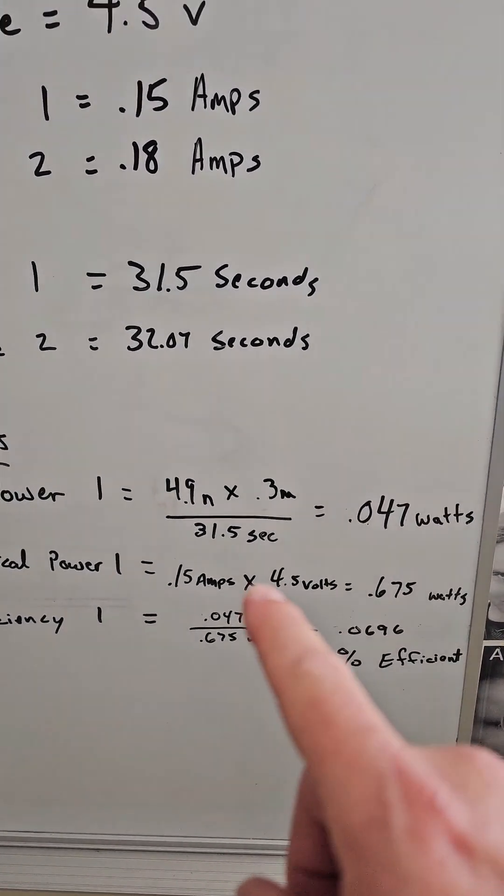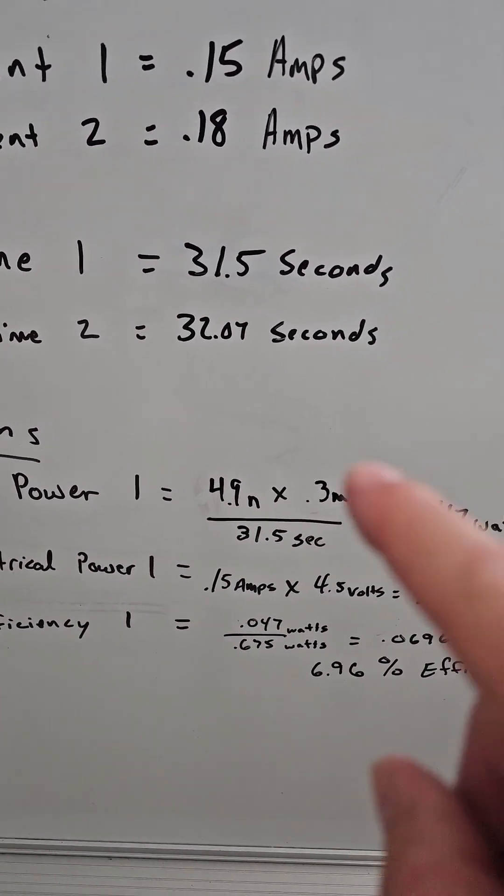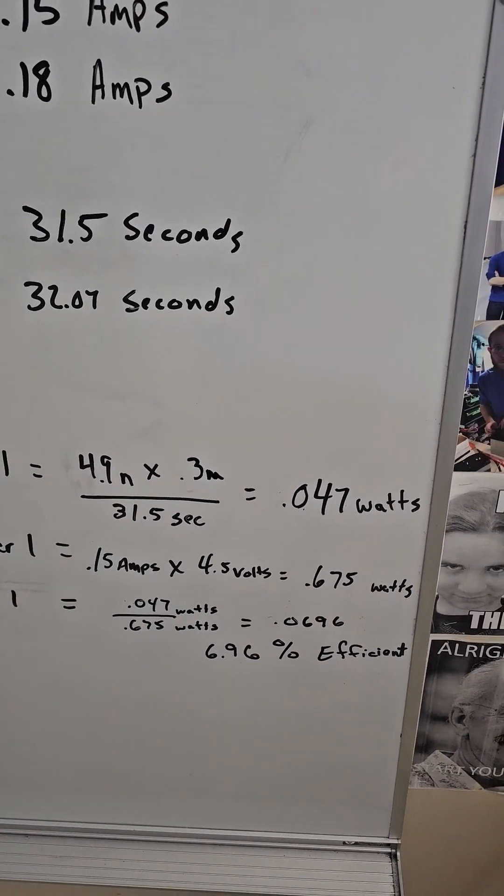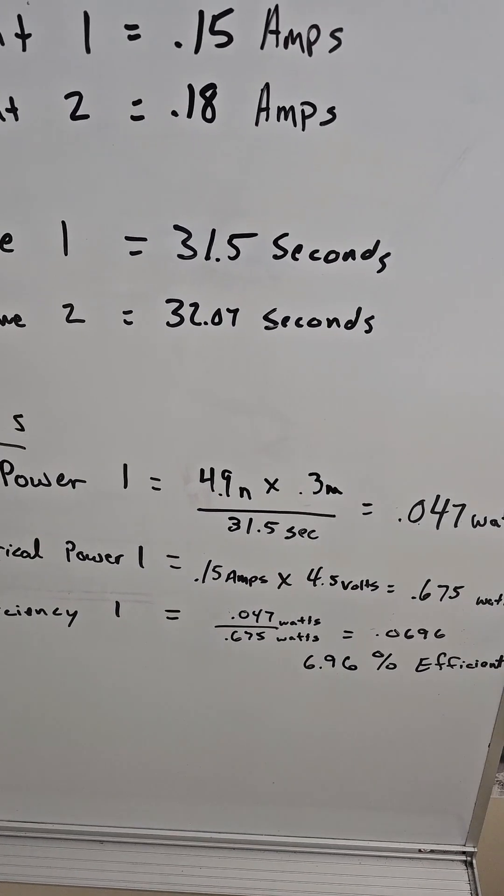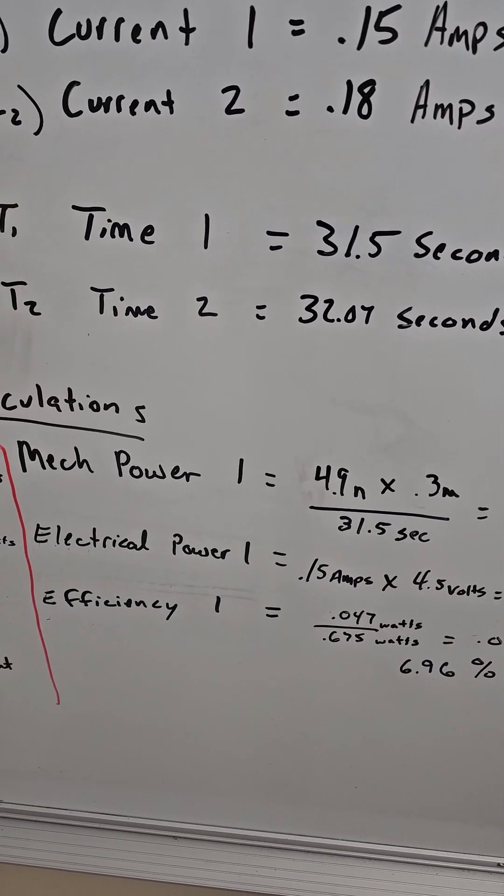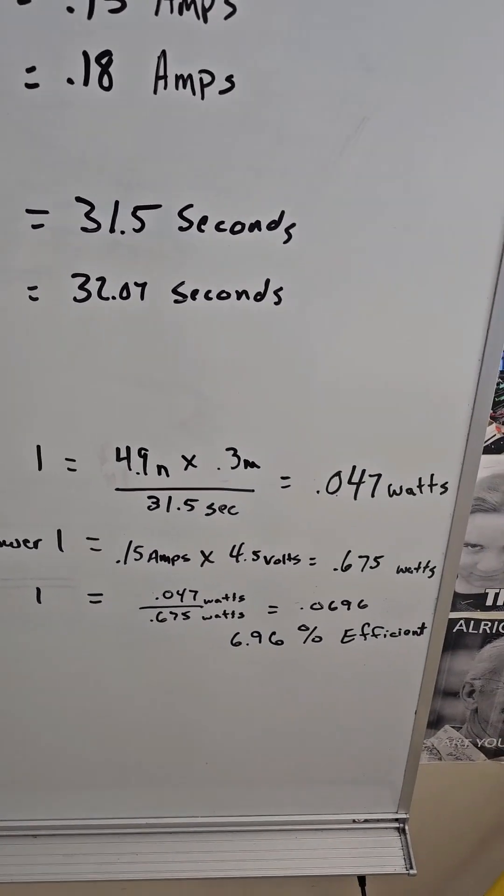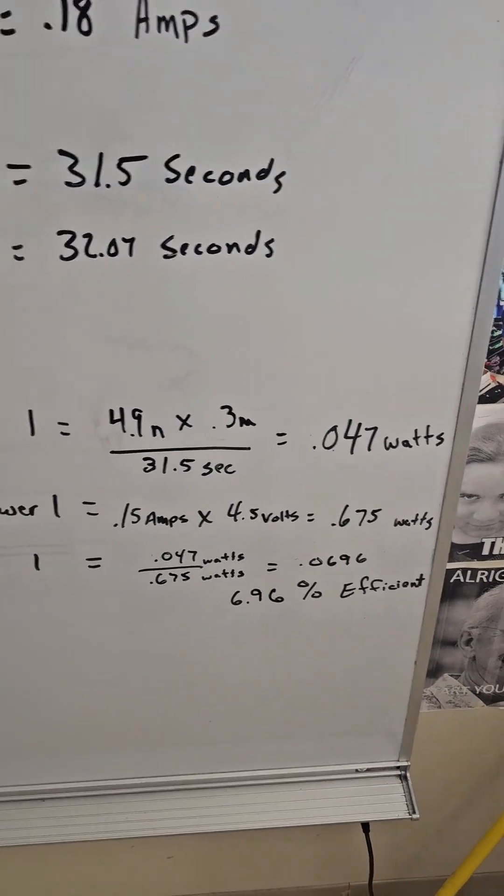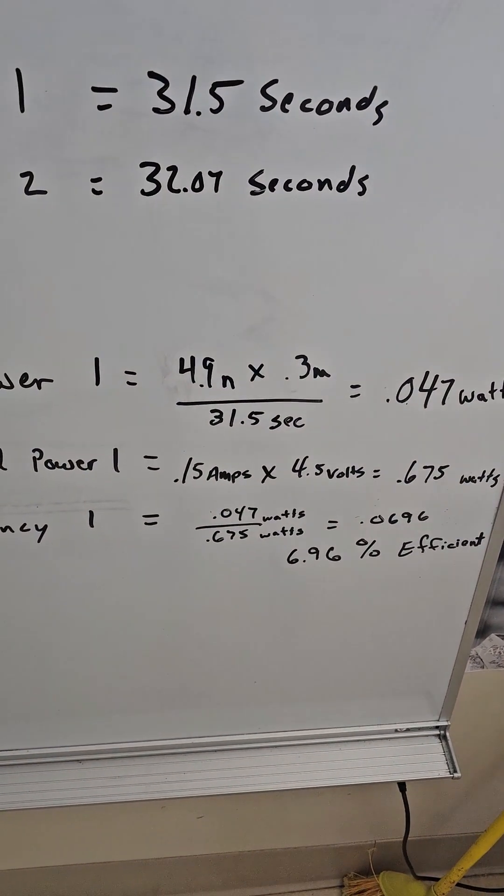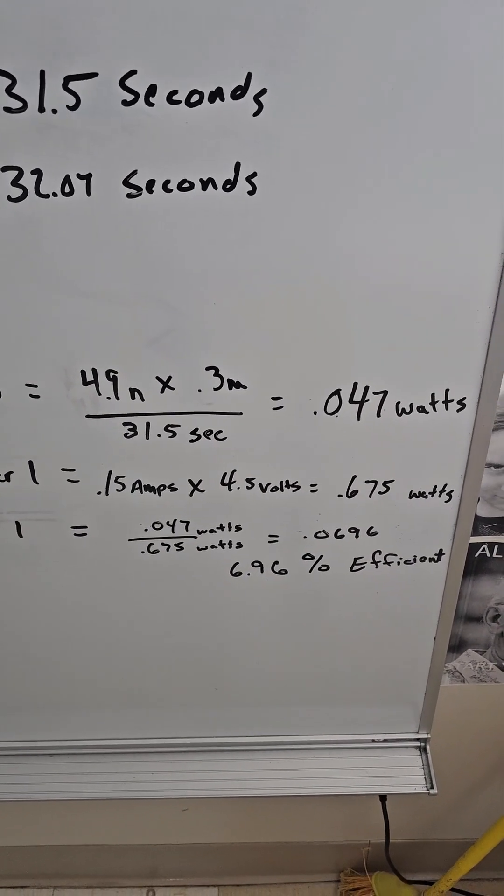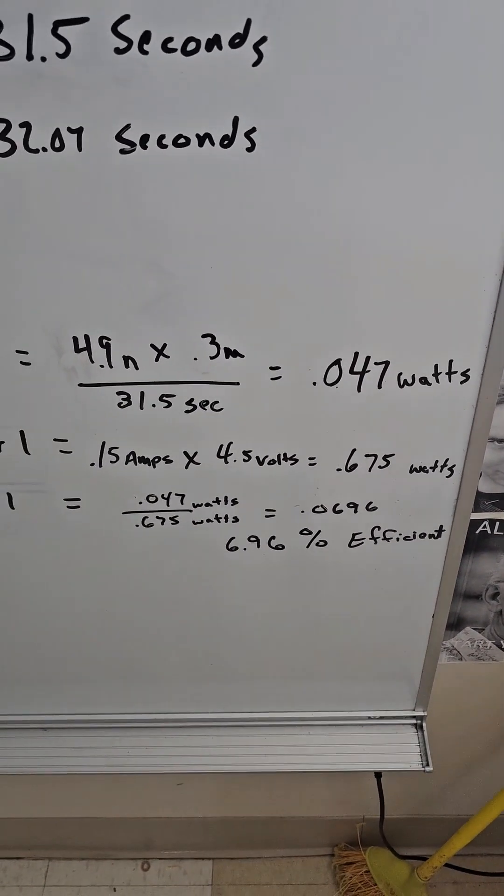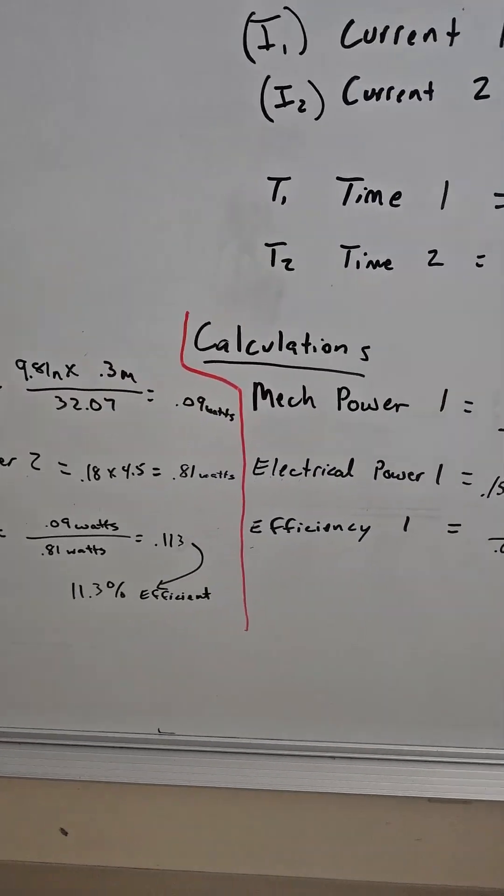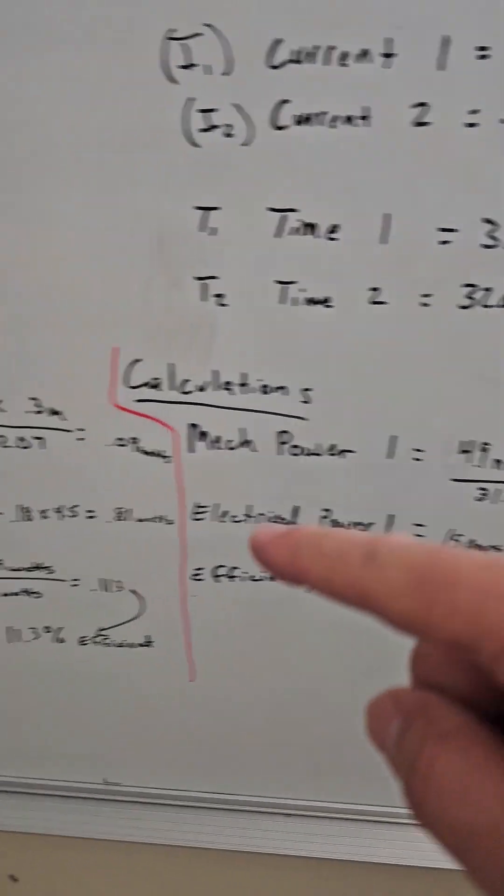If we are wanting to work this out, you can see we use our formula for mechanical power, which is force times distance divided by time. So we get 0.047 watts. For our electrical power, it's current times voltage. For the 500 gram weight, it was 0.15 amps times 4.5 volts, giving us 0.675 watts. So if we look at the efficiency, it's 0.047 divided by 0.675, so we get basically 6.96 percent efficient for that particular weight.